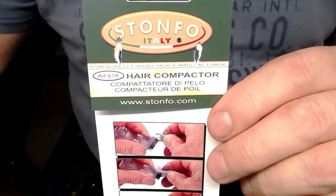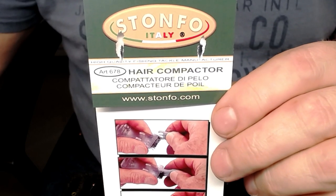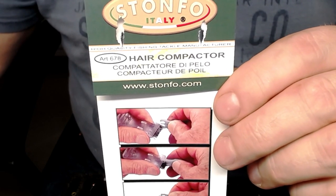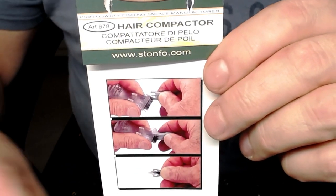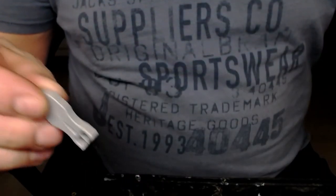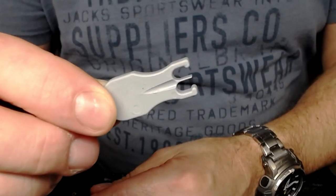I already opened it because I wanted to test it. So that's the name. And the little gadget looks like this. This is a Stånfåk hair compactor. And now I'm going to show you how to use it.